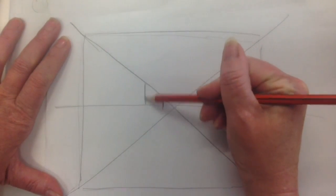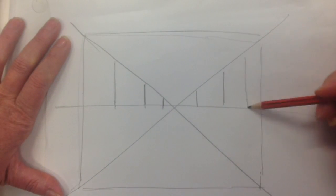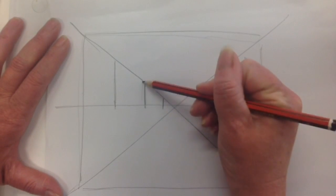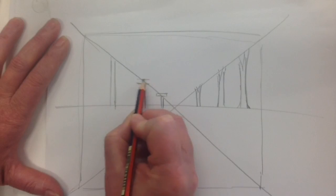Things that are closer to the vanishing point are smaller and things that are further away are bigger. So as they get closer to us they get bigger. These are very simple rules.